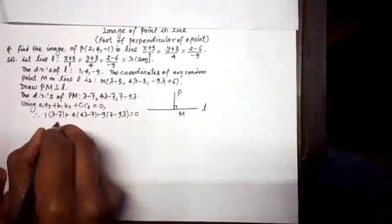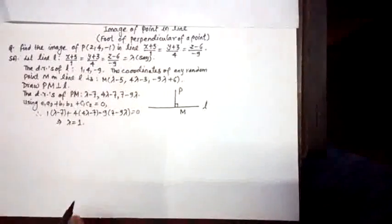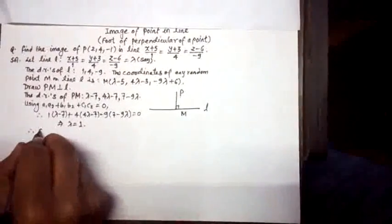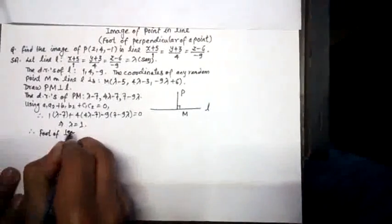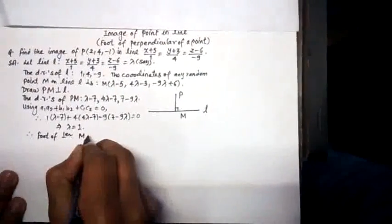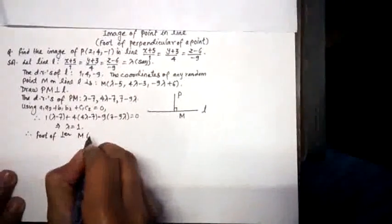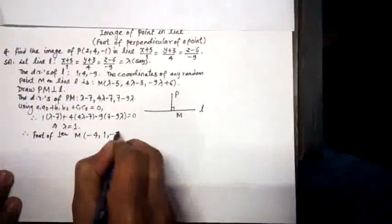On simplification of this, we shall be getting λ = 1. So here we get foot of perpendicular M in the given line by replacing the value of λ in the random coordinate, which will be (-4, 1, -3).